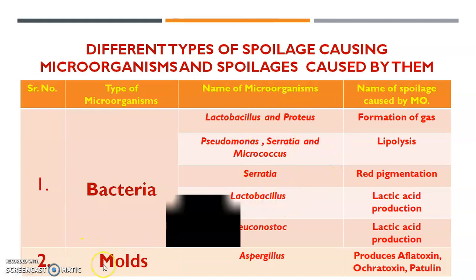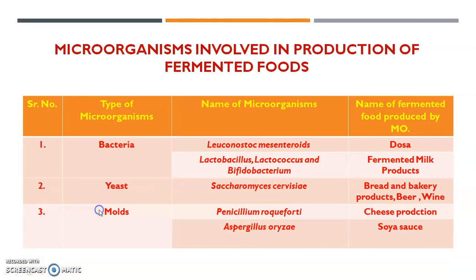Another category includes molds. For example, Aspergillus produces aflatoxin, ochratoxin, and patulin — all toxins produced by this mold, which is one type of spoilage-causing microorganism. Next are microorganisms involved in the production of fermented foods.